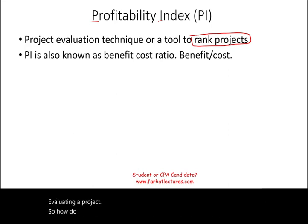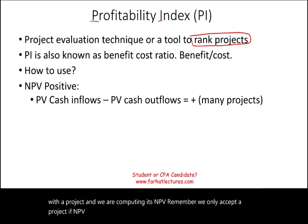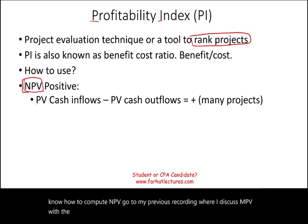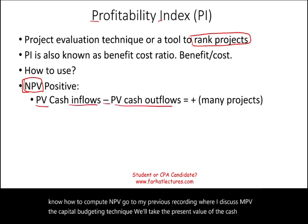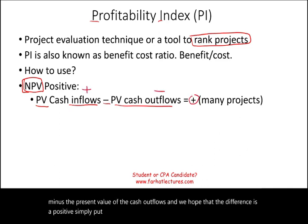So how do we put this profitability index to use? Let's assume we are dealing with a project and we are computing its NPV. Remember, we only accept a project if NPV is positive. We take the present value of the cash inflows minus the present value of the cash outflows, and we hope that the difference is positive — simply put, we have more inflows than outflows.